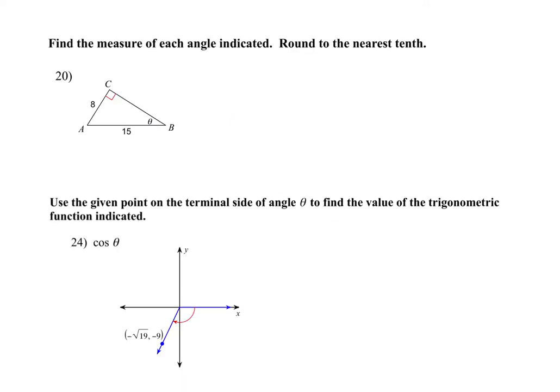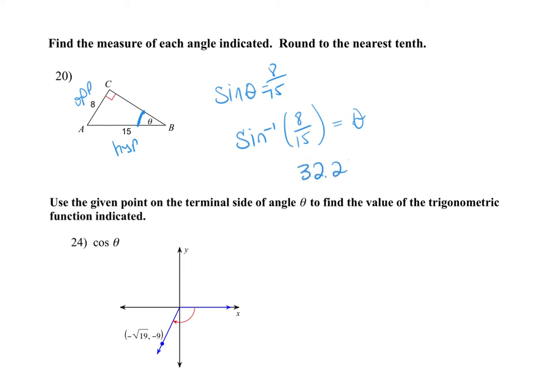When looking for an angle, use SOHCAHTOA to set up your ratio, but in your calculator use inverse functions — not reciprocal functions. If opposite is over hypotenuse, that's sine, so the inverse sine of opposite over hypotenuse gives you omega. The inverse undoes the function, which is what you're trying to do. Round to the nearest tenth — you'd get 32.2 degrees.